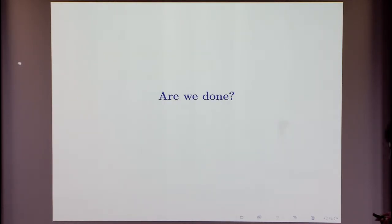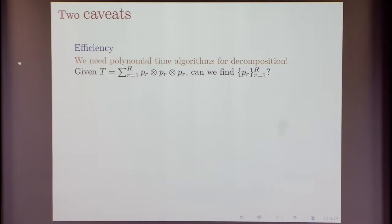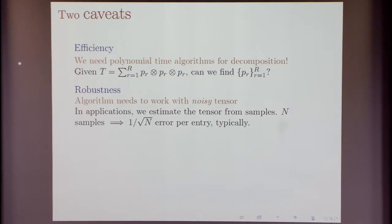The first caveat is the question of efficiency. Generally in computer science, the aim is to find polynomial time algorithms for decomposition. So let's say you are given this tensor T which is a sum of R outer products — I've absorbed the W into one of the P's. The question is: can you find these vectors P efficiently, in time polynomial in the number of parameters involved?